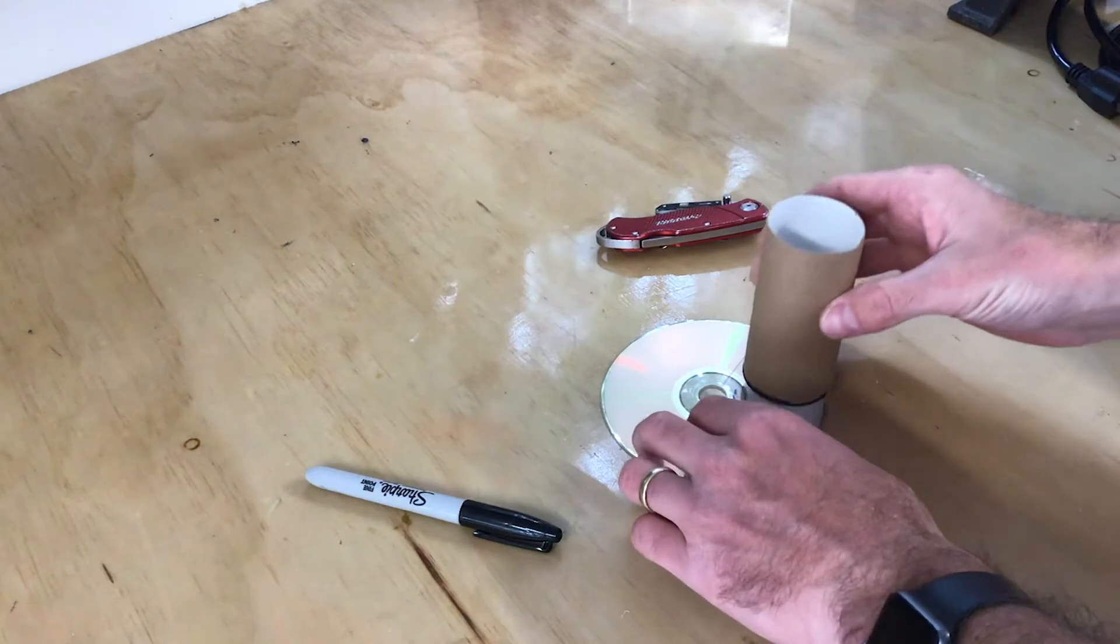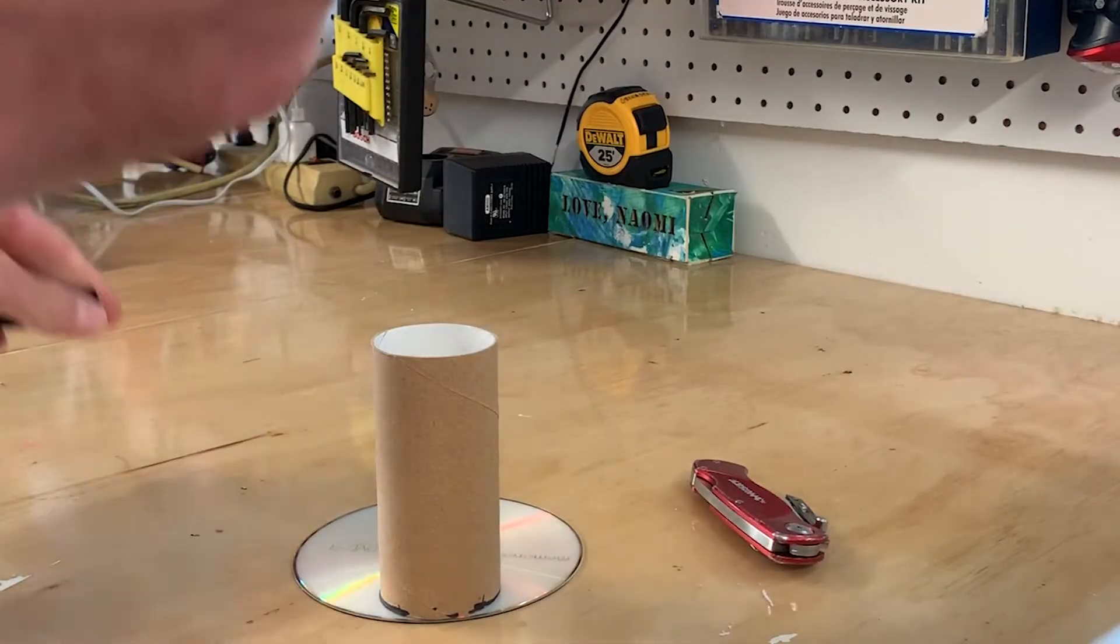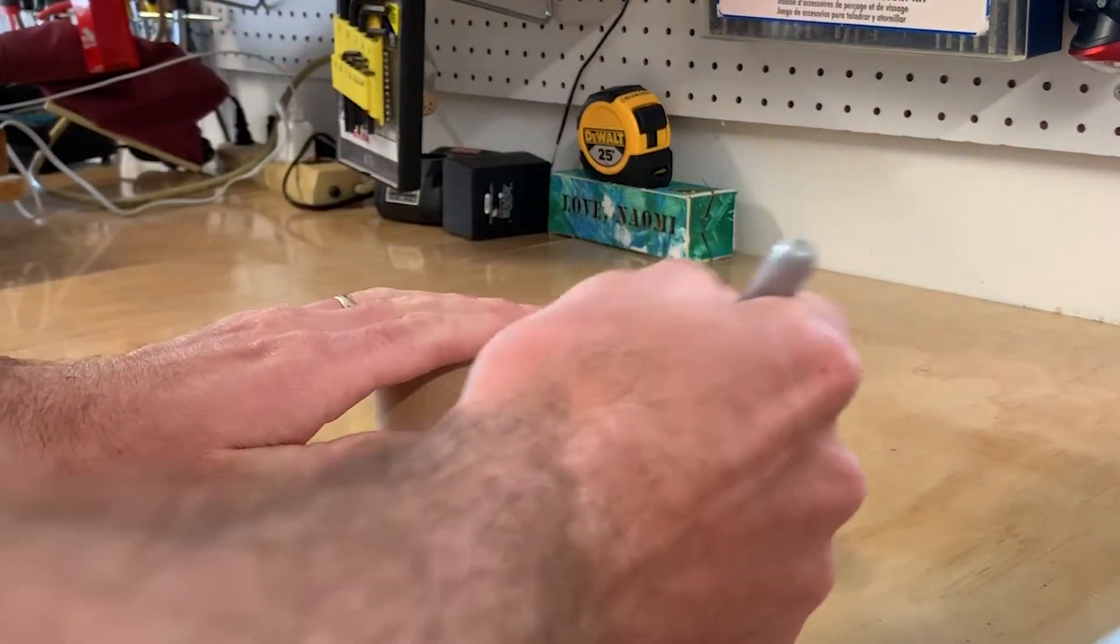The first step is to take your toilet paper roll, place it right up against the edge of the CD, and then trace a circle using your sharpie.